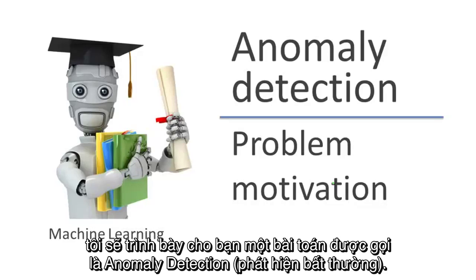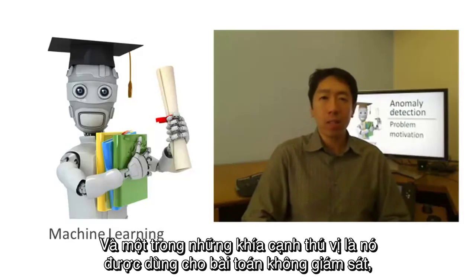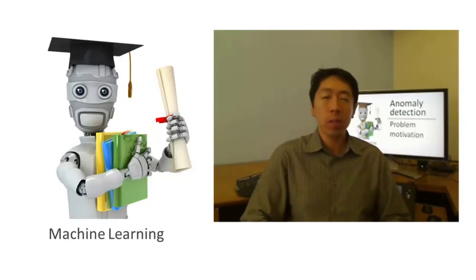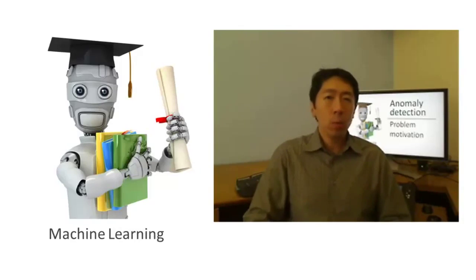In this next set of videos, I'd like to tell you about a problem called anomaly detection. This is a reasonably commonly used type of machine learning. And one of its interesting aspects is that it's mainly thought of as an unsupervised learning problem, but there are some aspects of it that are also very similar to a supervised learning problem.